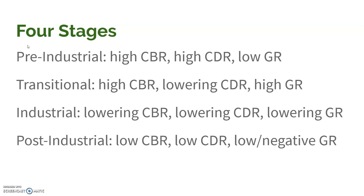The first stage is the pre-industrial stage with a high birth rate, high death rate, and low growth rate. In the transitional stage, we see the death rate begin to decrease, while the birth rate is still very high, so we're going to see a really high growth rate.